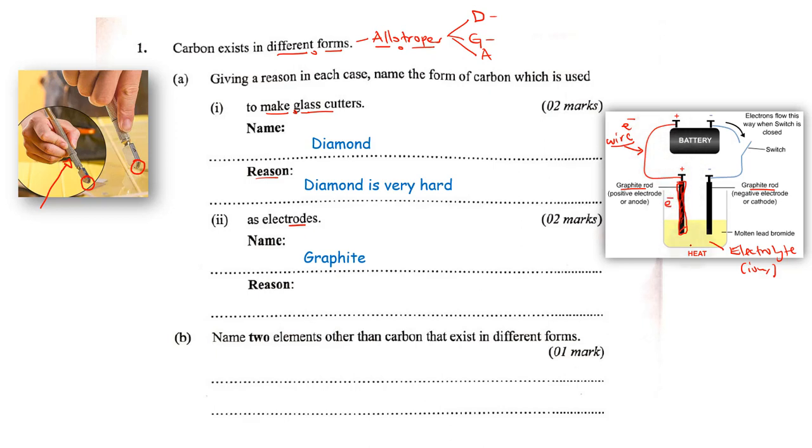It should be able to conduct electricity or at least help the movement of charges so that this circuit can be complete. So why is graphite good as an electrode? Feel free to check out my video on graphite—it explains why. Graphite contains free mobile electrons to conduct electricity. This is the reason why we use it as an electrode.